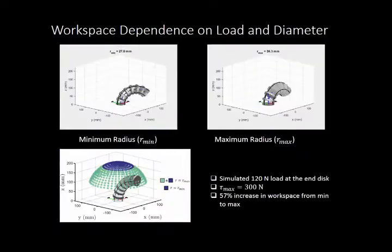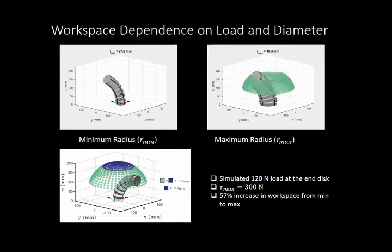Allowing the diameter of the robot to vary introduces kinematic redundancy, which can be used to reduce the load on the backbones. These simulations show the workspace points that a continuum segment is able to achieve while undergoing a 120 N load at its end disk and while staying below a maximum actuator force of 300 N.